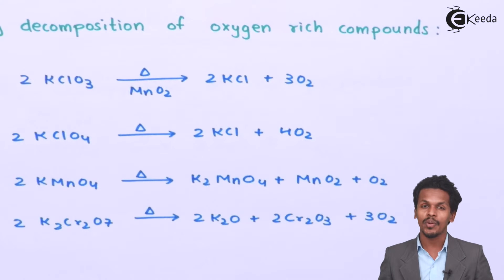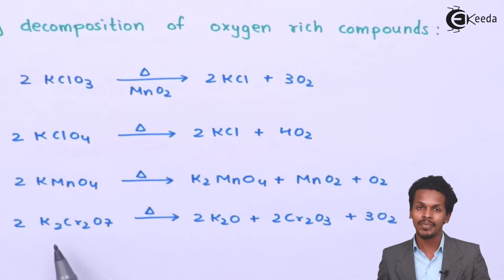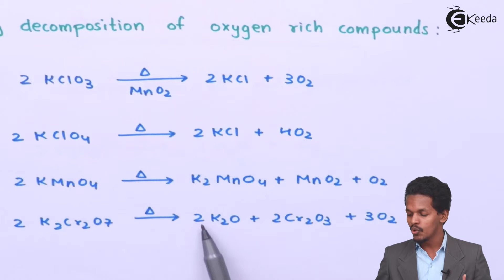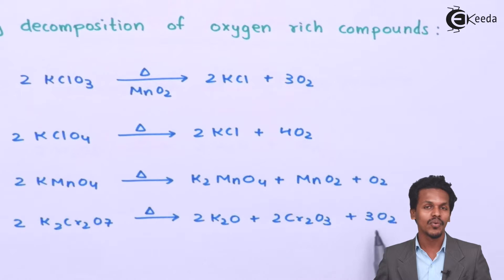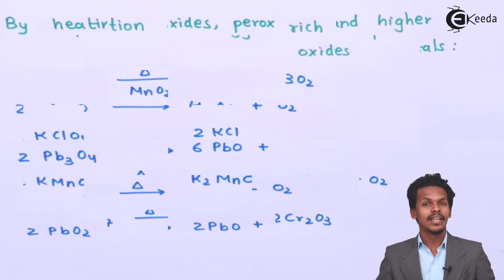In the next reaction, 2 moles of K2Cr2O7, that is potassium dichromate, when it undergoes decomposition, forms 2 moles of K2O along with 2 moles of Cr2O3 and 3 moles of O2. So again, this is one of the methods where we can obtain oxygen.